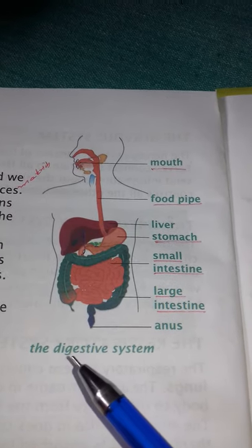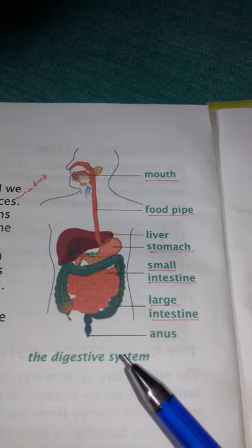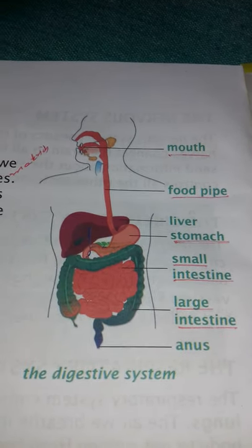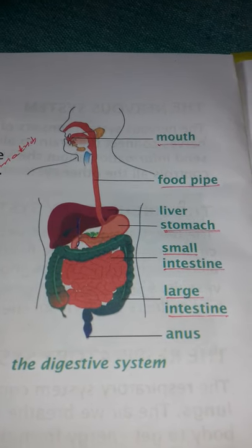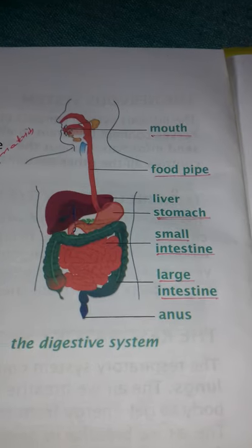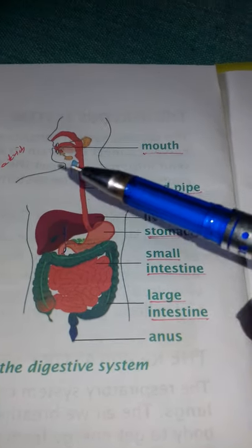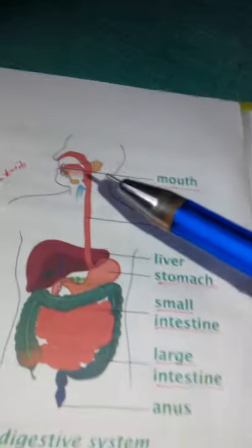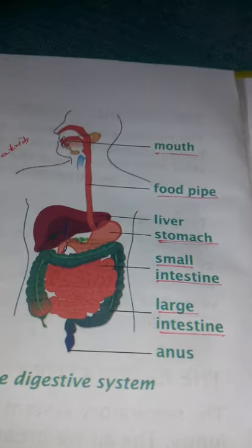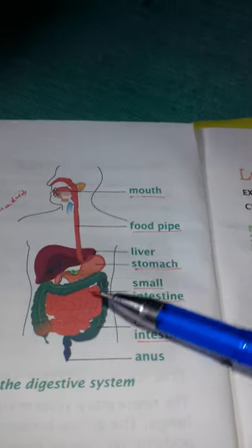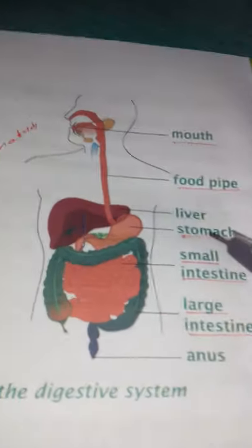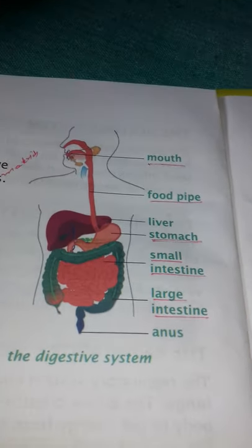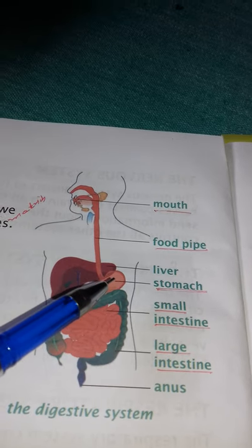Good morning, dear students. I am going to explain the digestive system. When we eat food, we break it into small parts, and these small parts come through the food pipe to the stomach. In the stomach, the food is a little bit digested, but it is not completely digested there.